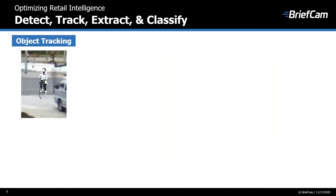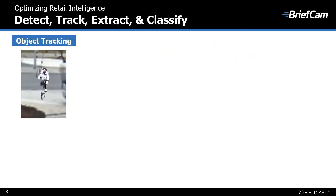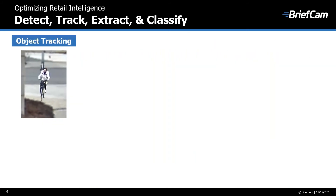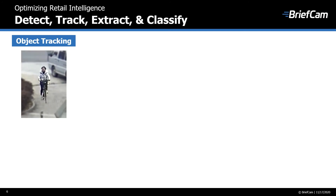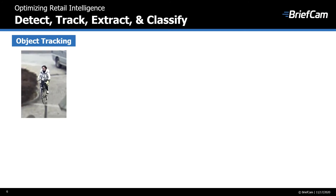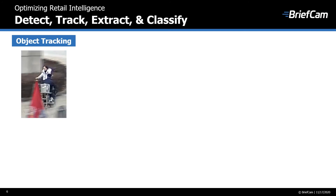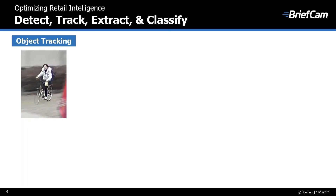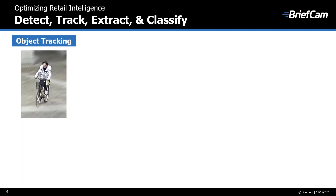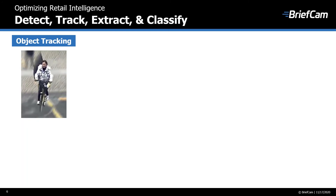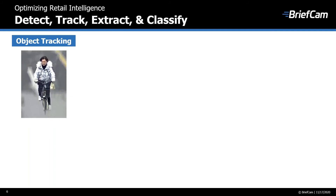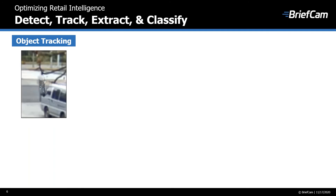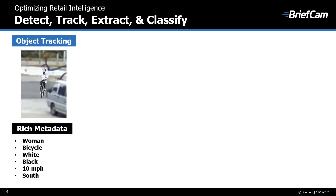BriefCam works by detecting, tracking, and extracting moving objects on a static background, and then classifying them for future searching — a process-once, use-many functionality. We process the video and extract those objects once so that we can later search across different metadata.